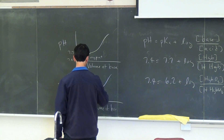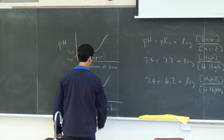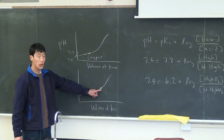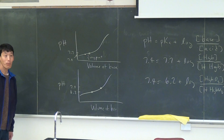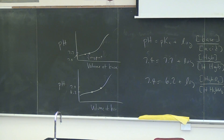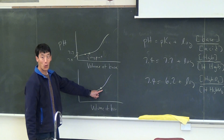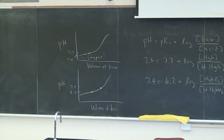For the other titration curve, the halfway point is at 6.2, and pH 7.4 is right at the edge of the buffer region. So at this pH for HHgbO2, there is going to be more base present. That's the other way you can do it — either use the calculation or use the titration curve.